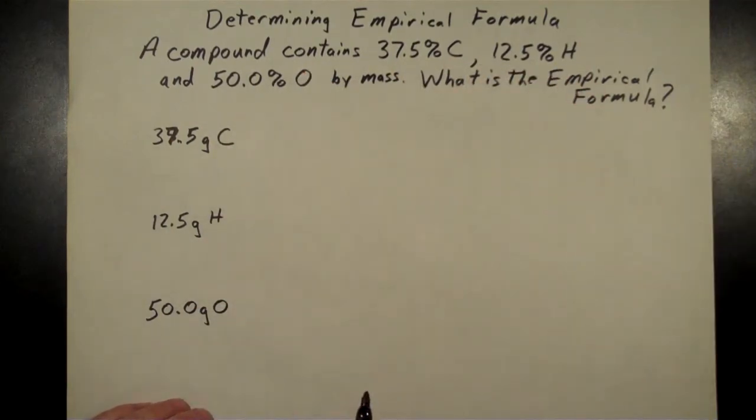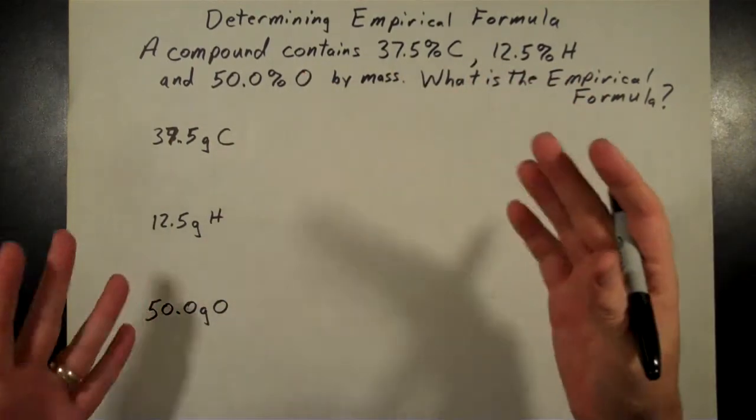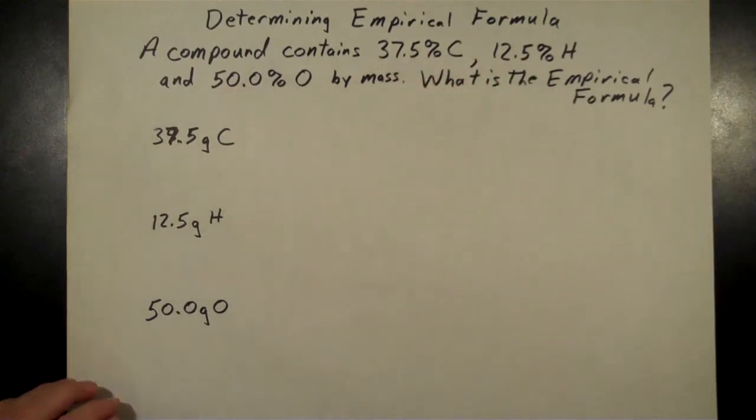All right, so just change each of those percent signs to gram signs because, again, it's by mass. If you had 100 grams of the stuff, then you'd have those same masses of each of those elements.